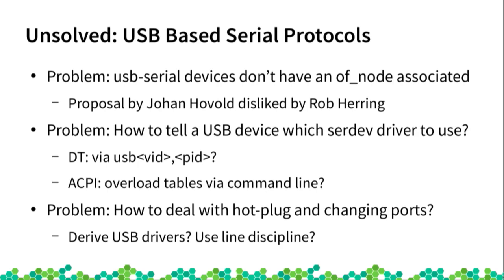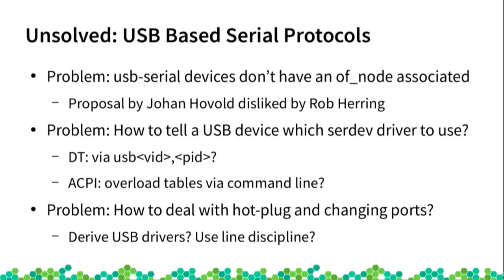One approach was to have a special serial node under the device bus that gets numbered. Another, as used for example by the Raspberry Pi, is the USB vendor ID / product ID schema to pass through MAC addresses from firmware into the kernel driver. For that you need to know on which part of the USB hub topology the device is connected. With ACPI it becomes more difficult — I did find a command line option to overload ACPI tables from a RAM disk to add device information, since you don't want to flash custom notebook firmware.